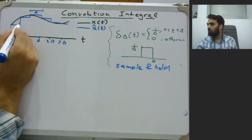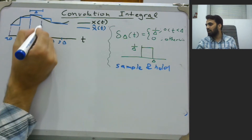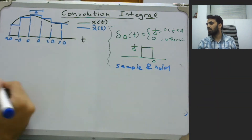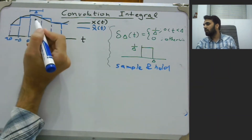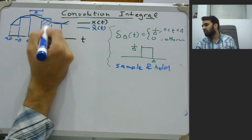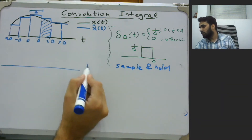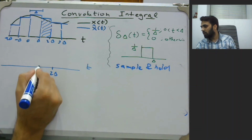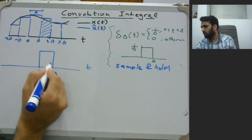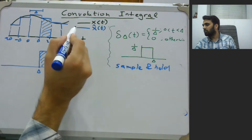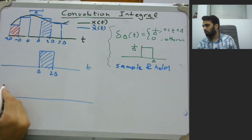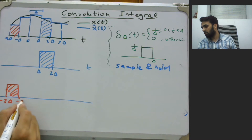So we can simply make boxes identifying each particular sample value and the hold value. Next, we can extract one particular sample — for example, we can extract this one, which is starting at Delta and terminating at 2 Delta. Similarly, we can extract this signal which was starting at minus 2 Delta and terminating at minus Delta.